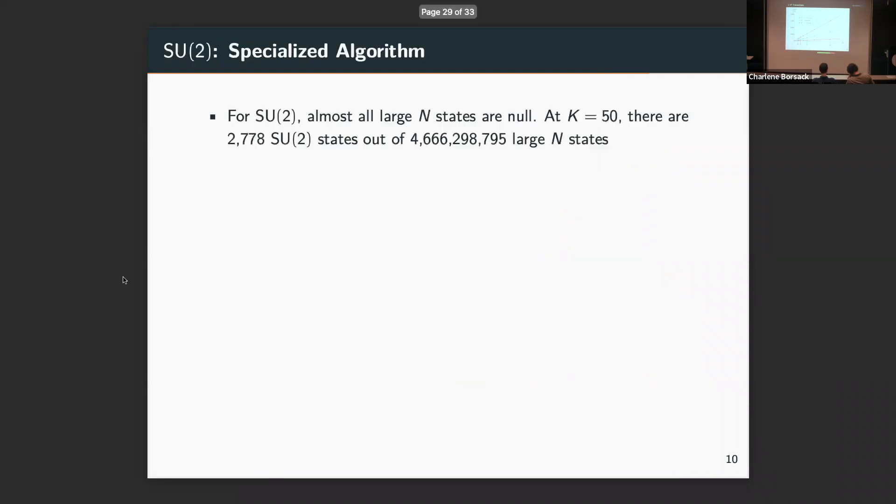Let me just briefly discuss SU(2). SU(2) is a bit different, as you can probably see from those counts before. For any N they're smaller. For SU(2) they're way smaller. So for K equals 50, for instance, there are over 4 billion large N states you could write down, and less than 3,000 are physical. So you really wouldn't want to be trying to write down 4,600,296,000 relations out of the 4 billion total. It would be much better to work directly with a physical basis.